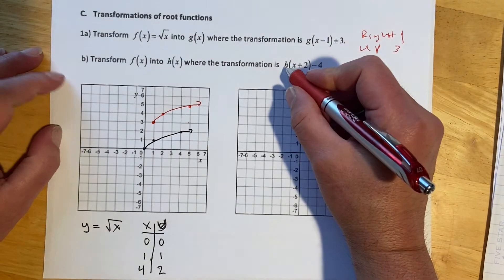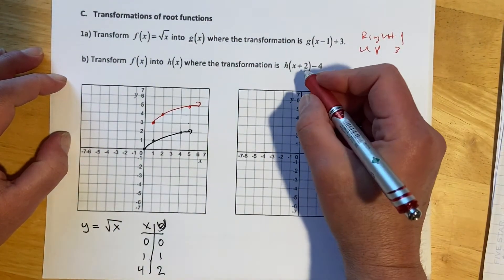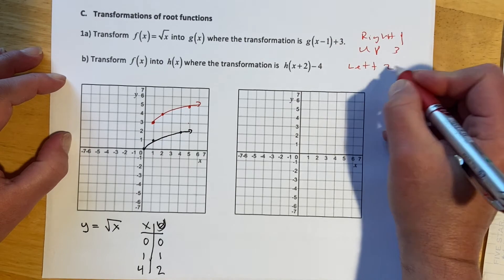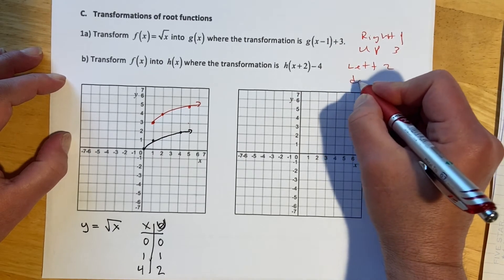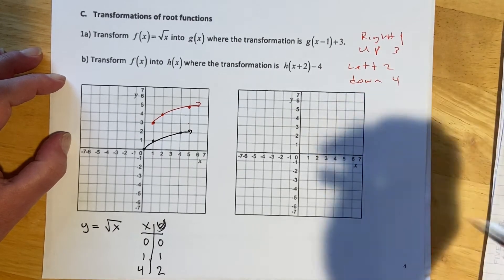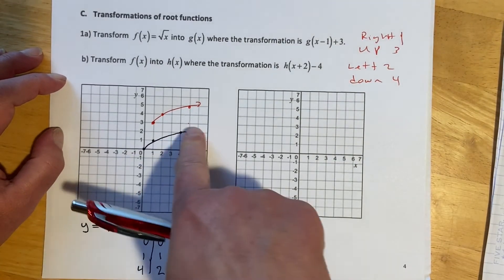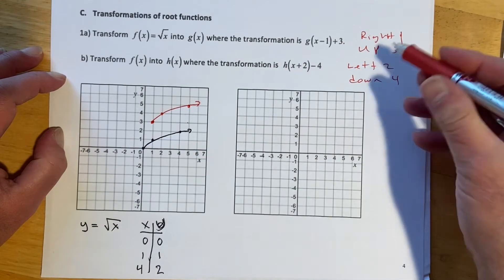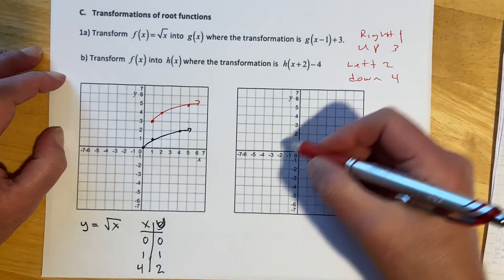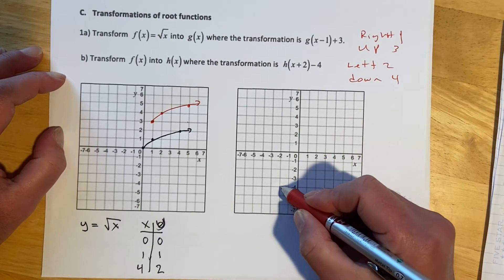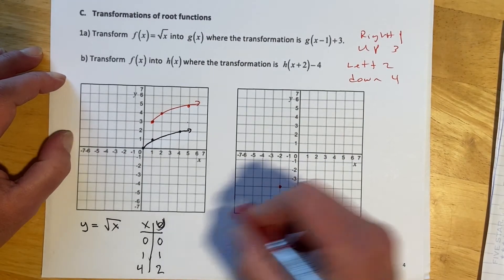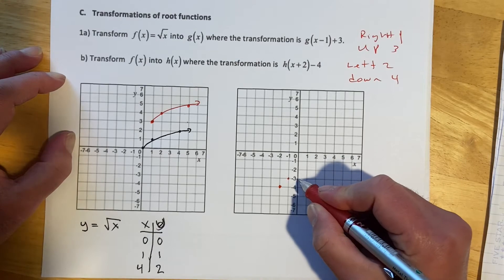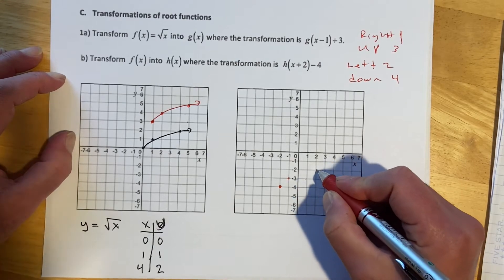This next one, same thing — we're still working on a square root. But this time we're going to go left 2 and down 4. We're always using that parent function shape right here, so I'm going to go left 2 and then down 4. That puts my new starting point there. It goes over 1, up 1, and then over 1, 2, 3, up 1. All I'm doing is copying the shape.